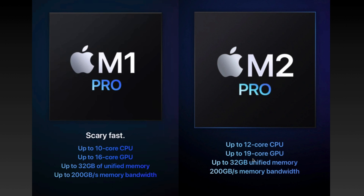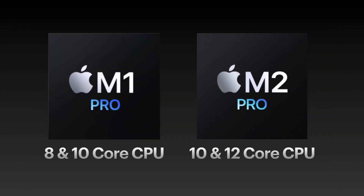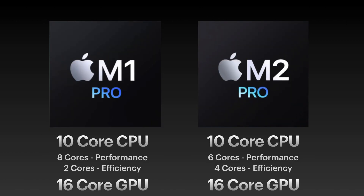Looking at the GPU, we have a 19-core GPU in the M2 Pro versus a 16-core GPU in the M1 Pro. The M1 Pro was available with 8 and 10-core CPUs, while the newly refreshed M2 Pro comes with 10-core and 12-core CPUs — an upgrade of two cores in each unit. In the 10-core CPU of the M1 Pro, there were 8 performance cores and 2 efficiency cores, whereas the new 10-core M2 Pro has 6 performance cores and 4 efficiency cores.